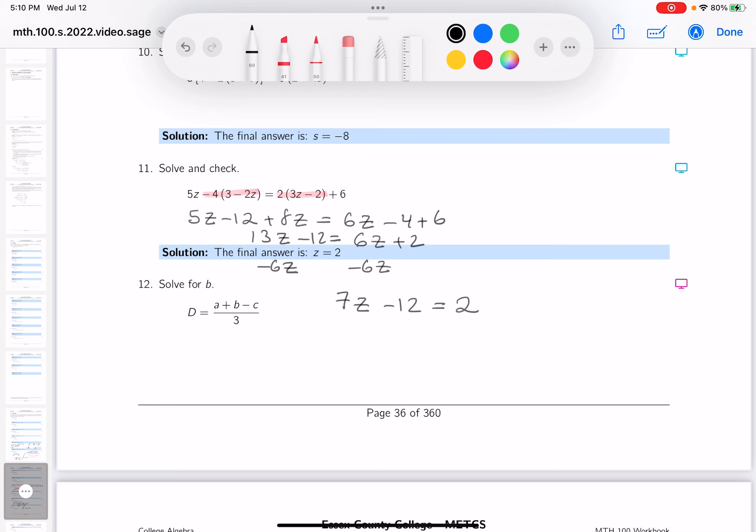Now I'm going to add 12 to both sides. What do you get? 7z equals 14. Now I'm going to divide both sides by the numerical coefficient, and you get z equals 2.